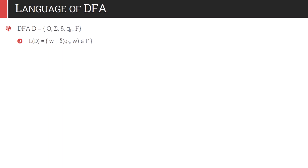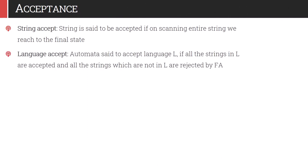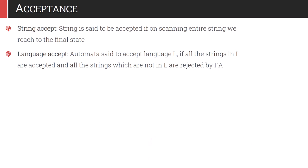The language of a DFA D is defined as L(D) = { w | δ̂(q0, w) ∈ F }. A string is accepted if, on scanning the entire string, we reach a final state. A DFA is said to accept language L if all strings in L are accepted and all strings not in L are rejected. Both conditions must hold — even if one valid string is rejected, the automata is incorrect for that language.